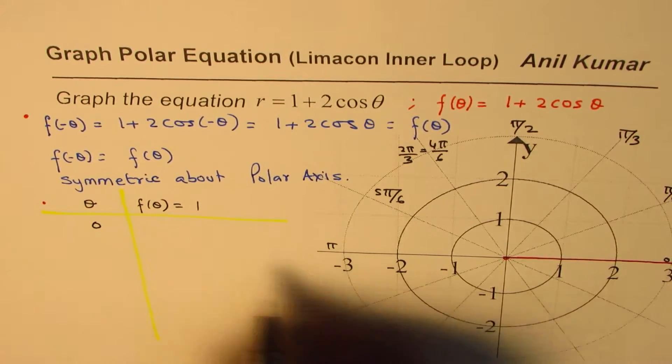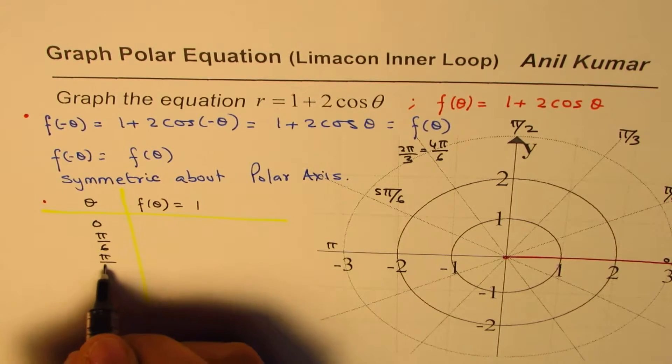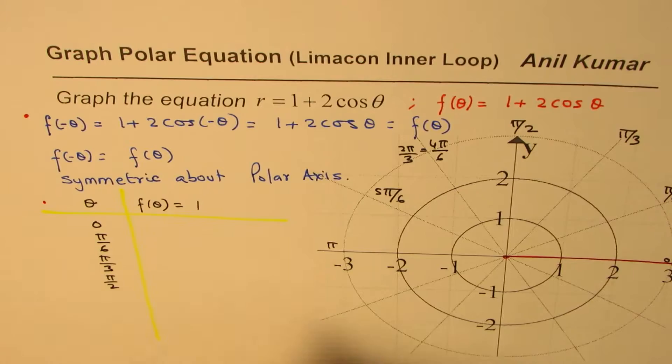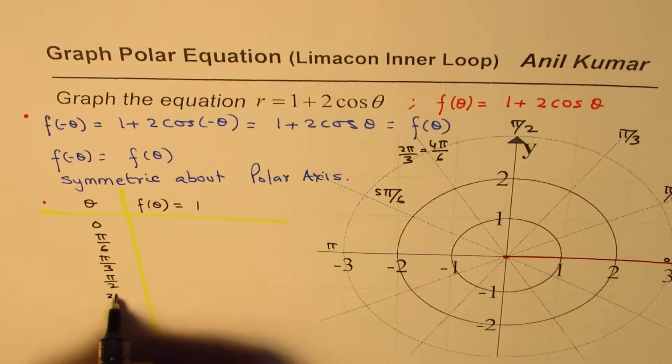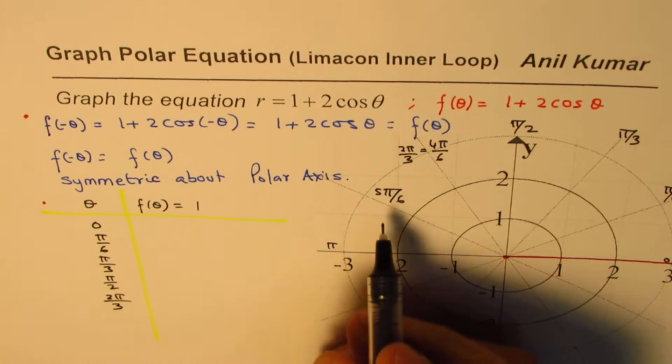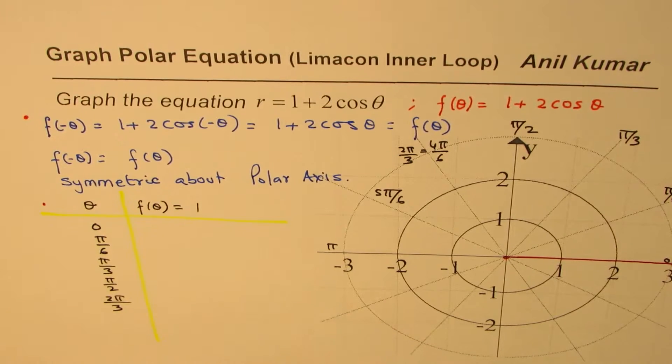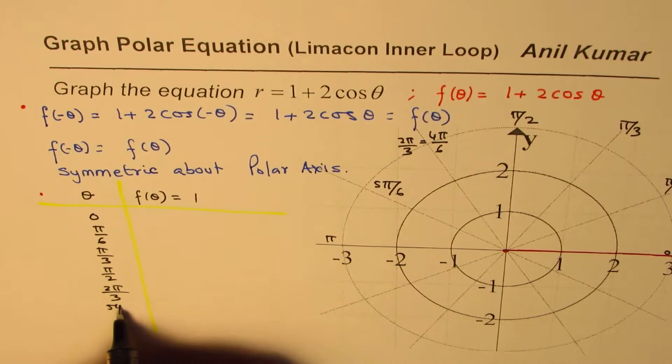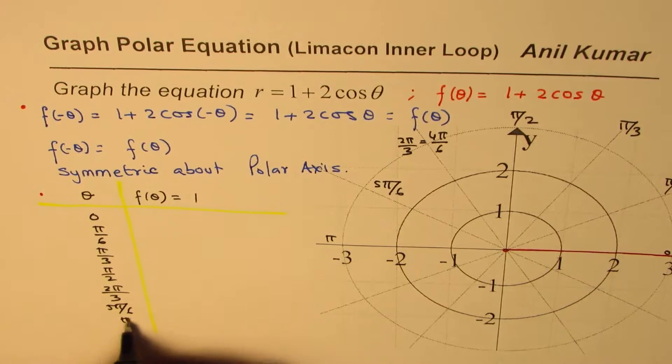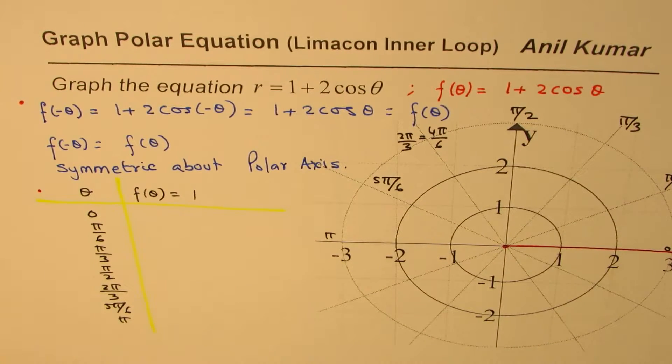So let's take 0, pi by 6, pi by 3, pi by 2, and then 2 pi by 3, 5 pi by 6 and pi. So these are the points, I hope you can see them.